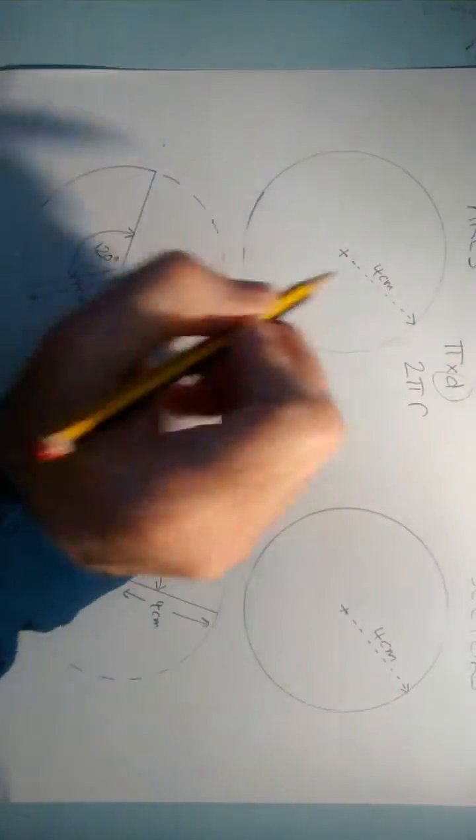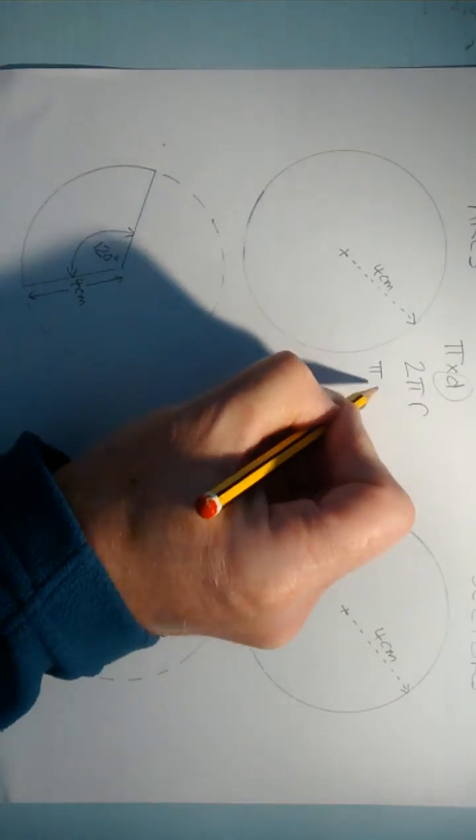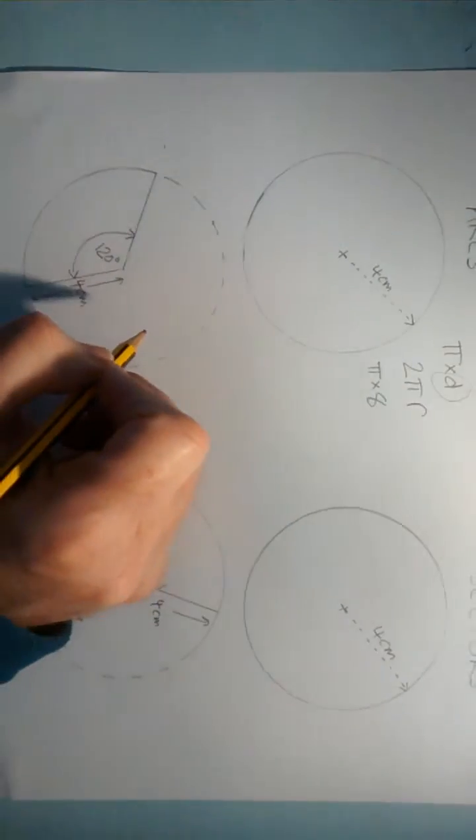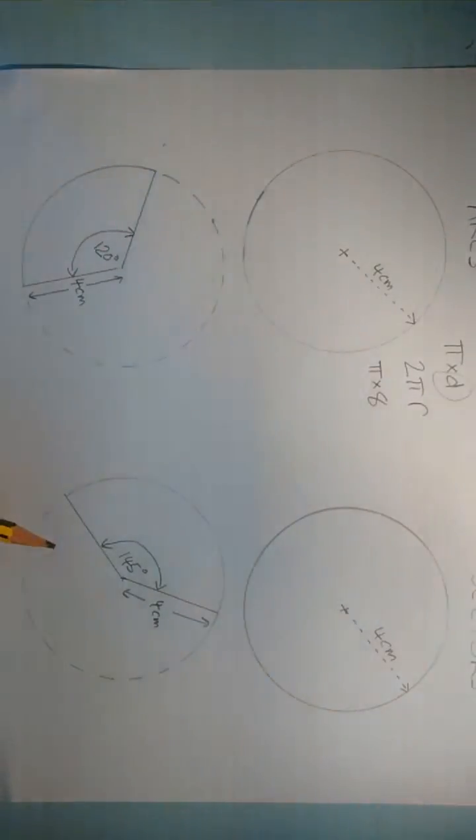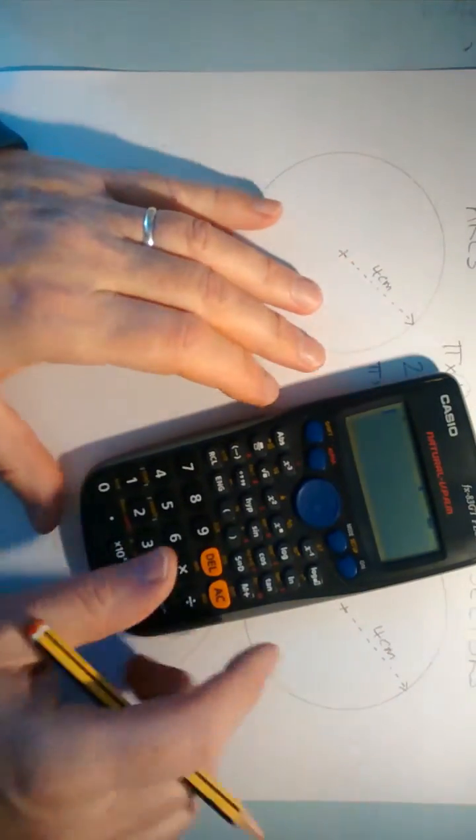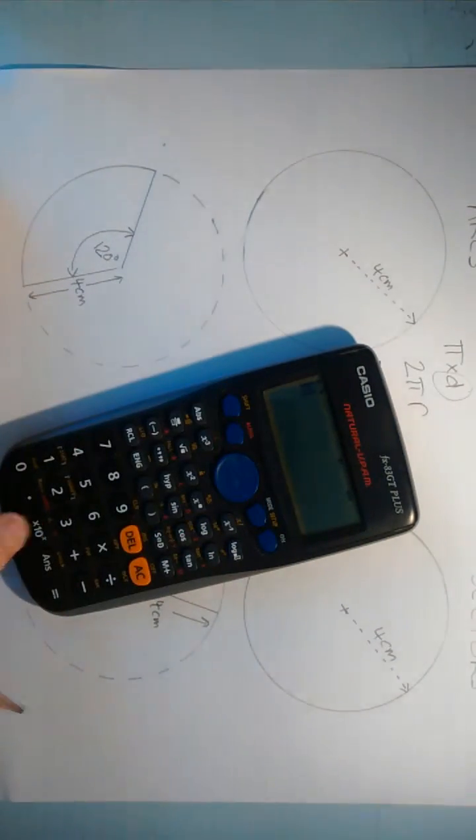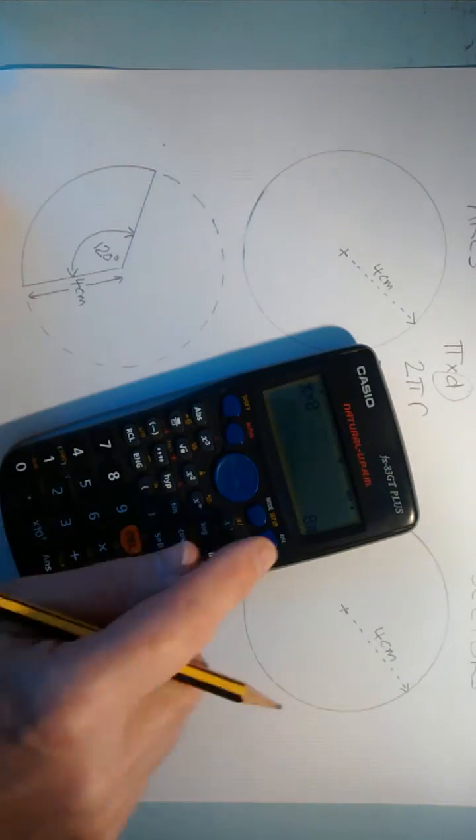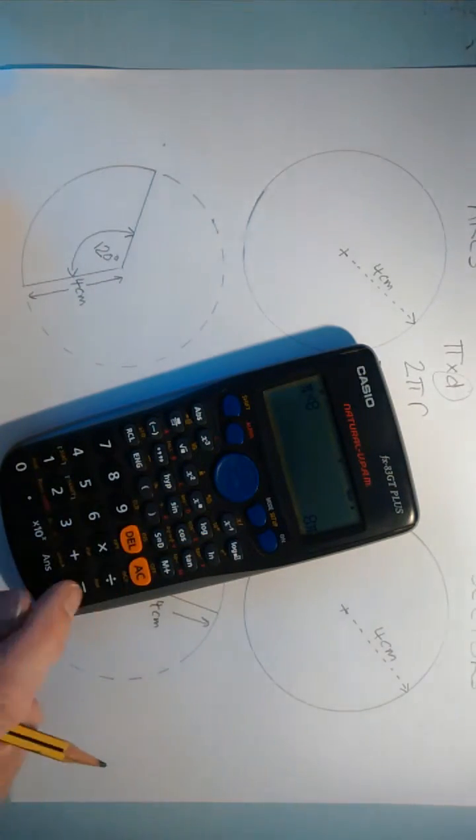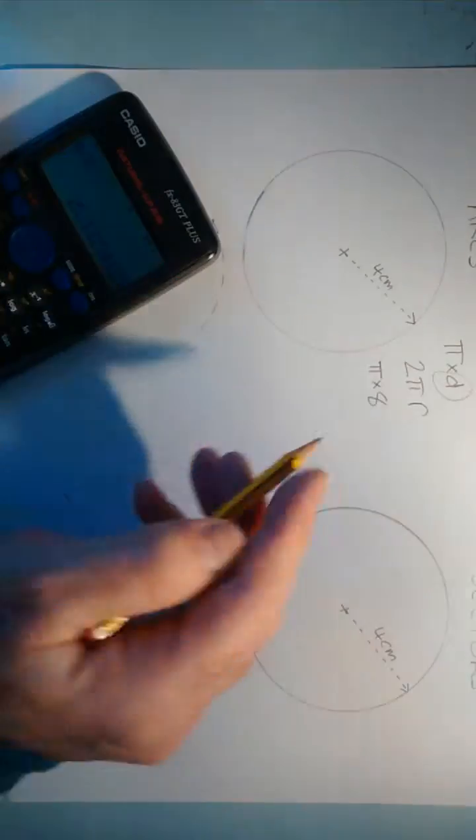So in this particular case here, we've got pi times 8. So we just get the old calculator out. And on the calculator, we just use the pi button. Shift and pi, multiply that by 8, and that gives us 8pi, which is all very helpful, but we could also change it into decimals, 25.13 cm.